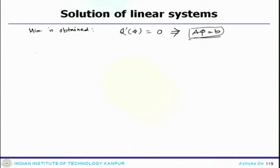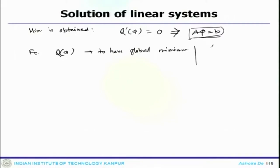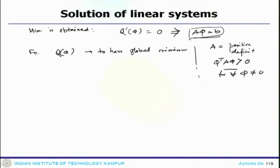For the function Q(φ) to have a global minimum, it is necessary for the coefficient matrix A to be a positive definite matrix. That means A satisfies φᵀ A φ > 0 for all φ ≠ 0. That is the property of a positive definite system, and these are the properties that while discussing the properties of linear systems we noted would be used here.